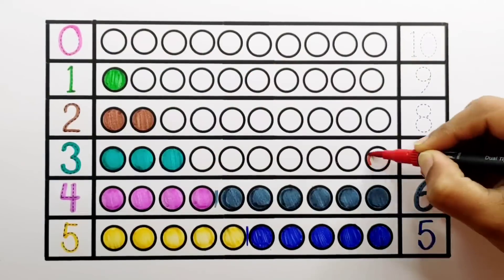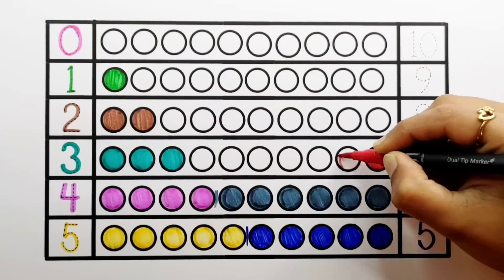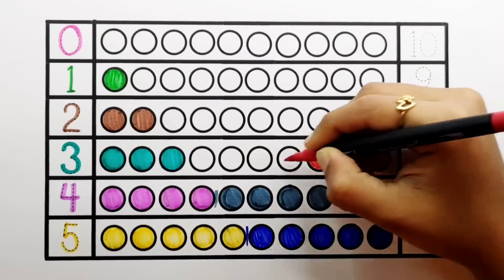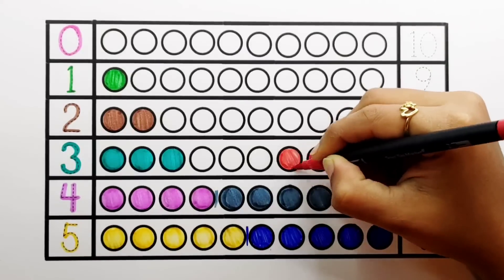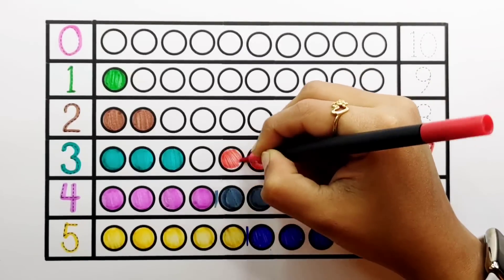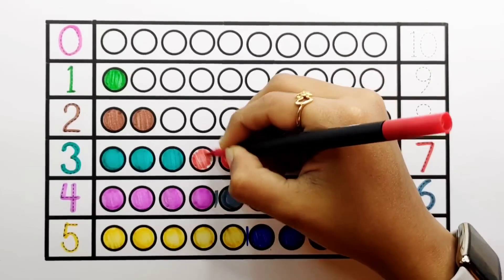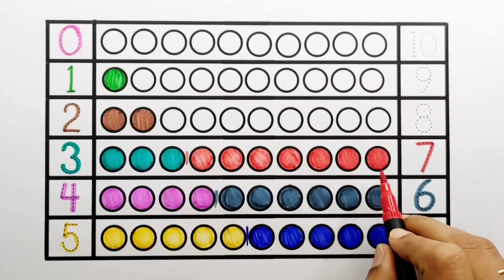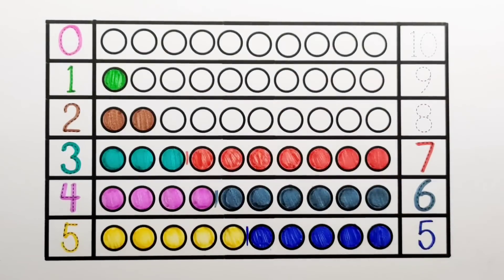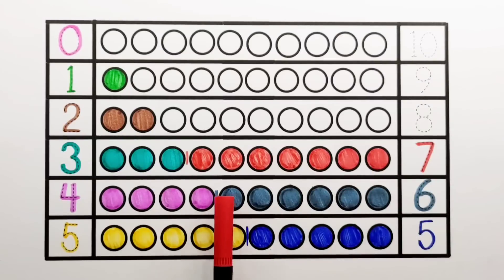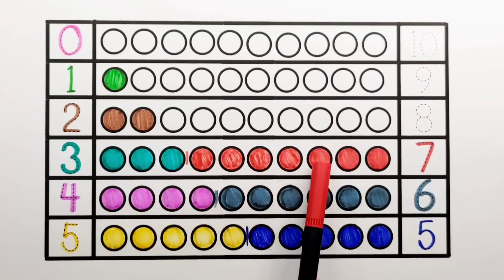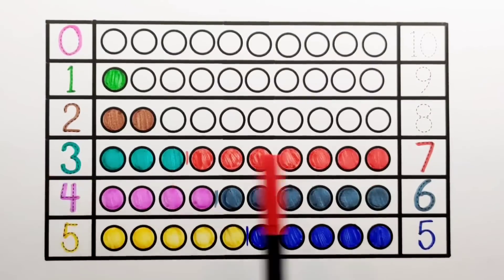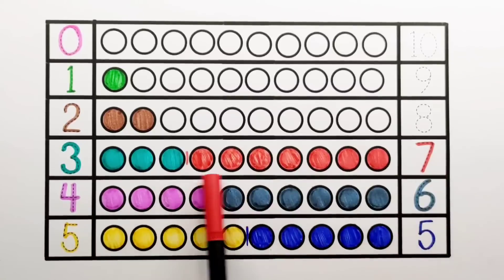Number 7. 1, 2, 3, 4, 5, 6, 7 — 7 balls. 3 plus 7 makes 10. 1, 2, 3, 4, 5, 6, 7, 8, 9, 10. 3 plus 7 equals 10.